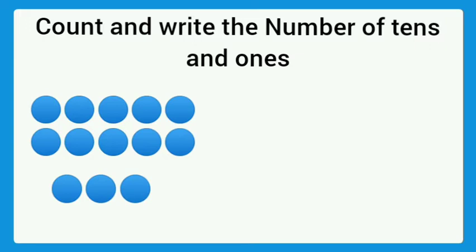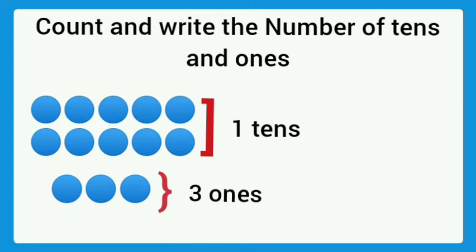1, 2, 3, 4, 5, 6, 7, 8, 9, 10. Here 1 ten. And how many ones are here? 1, 2, 3. 3 ones. So the total number is 13.